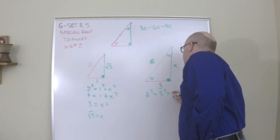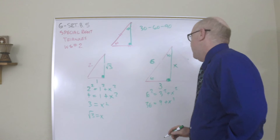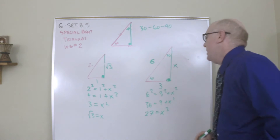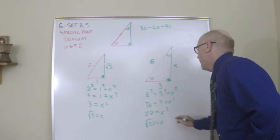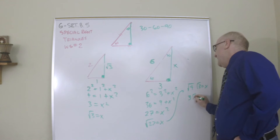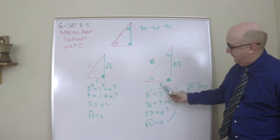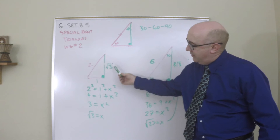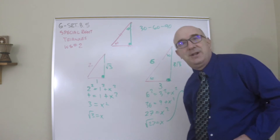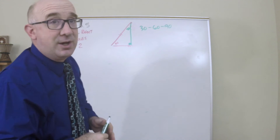Quick math: the hypotenuse squared equals 1² + x², so 4 = 1 + x², giving √3 for that value. Then with the 6 case: 6² = 3² + x², so 36 = 9 + x², giving 27 = x², and √27 = x. Simplifying: √9 × √3 gives 3√3. So notice: the middle side is this number times √3, or divide by √3 to go back. We've found a cool relationship.